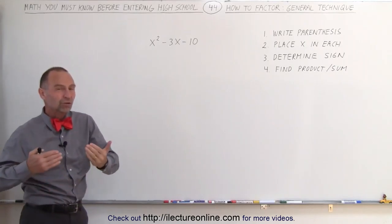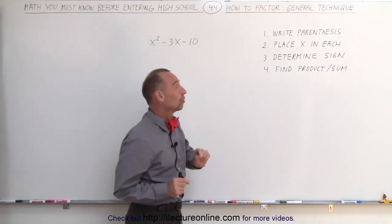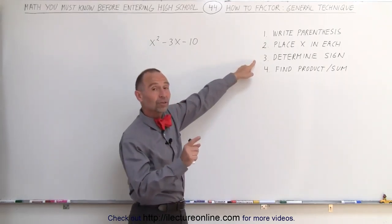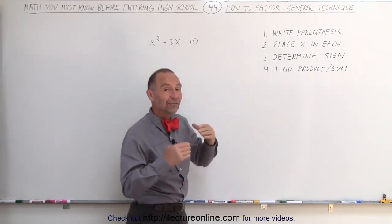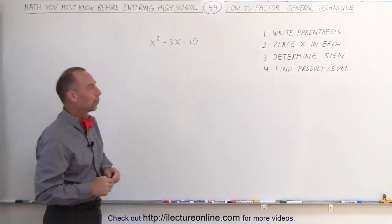How do you do that? Well, there's four definite steps. First you write the parentheses, then you place an x in each of the parentheses, then you determine the signs, and then you finally find the numbers such that the product and the sum add up to the correct numbers. Let me show you how that works.